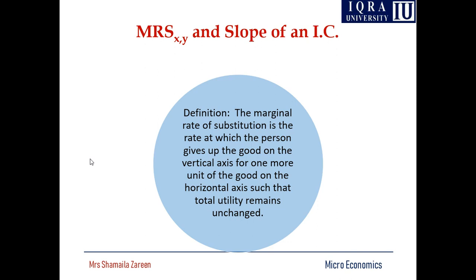There is a question of how the marginal rate of substitution is related to the slope of the indifference curve. The slope of the indifference curve is negative, and indifference curves are convex — the reason for convexity is the diminishing marginal rate of substitution between x and y. Whenever you are consuming one commodity, you are giving up another — consuming more food means forgoing more clothing. The MRS is the rate at which the person gives up the good on the vertical axis for one more unit of the good on the horizontal axis, such that total utility remains unchanged — that is why MRS and the slope of the IC are related.